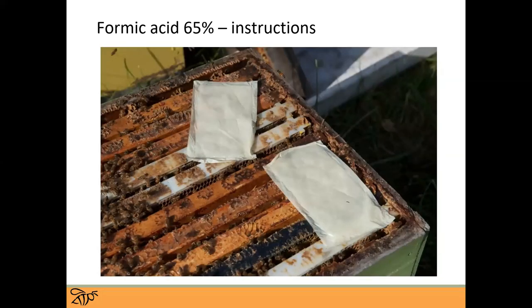When you come back to put on the second pad, the first pad is usually either chewed up and pulled out by the bees already, or you can just move it back and place the next pad. So you'll have two pads at that point. When you come back for the third treatment, remove the oldest one and put a new one on. For treating a double, that's why there are two pads — that's what the multiple application method looks like.